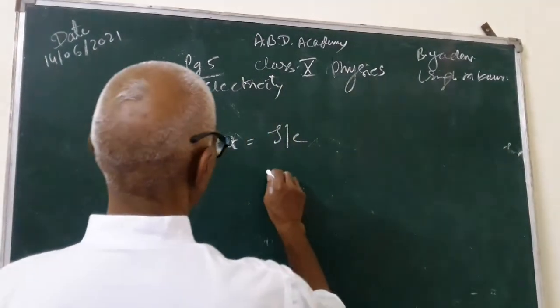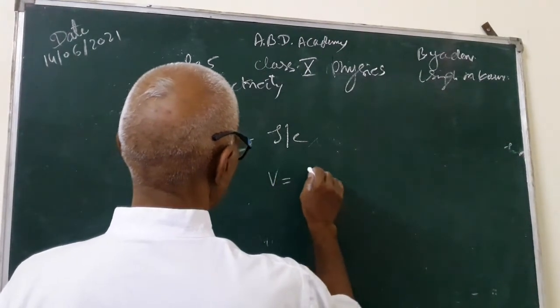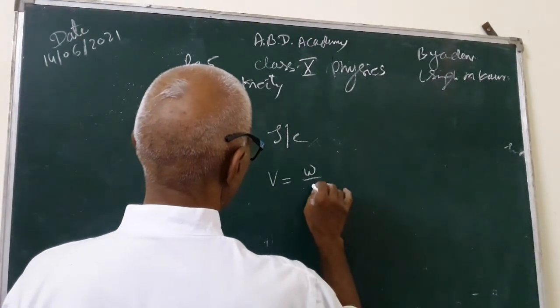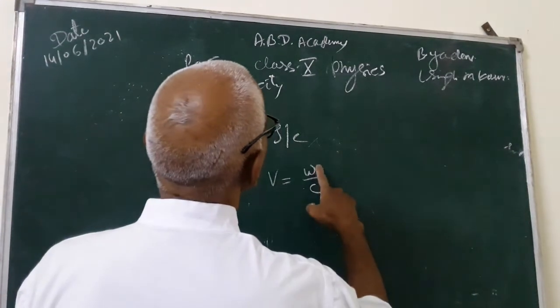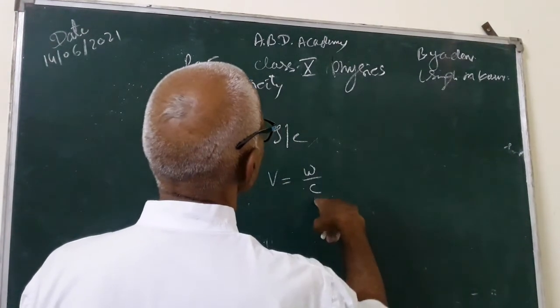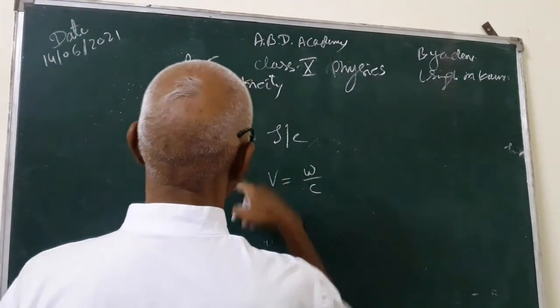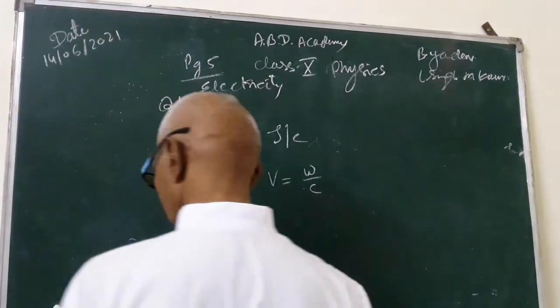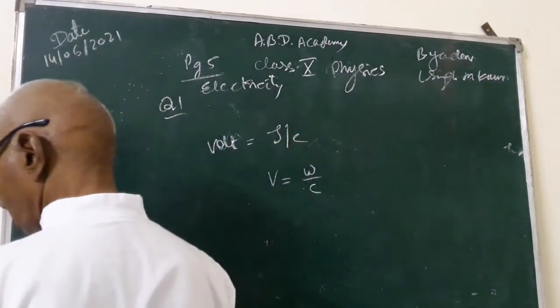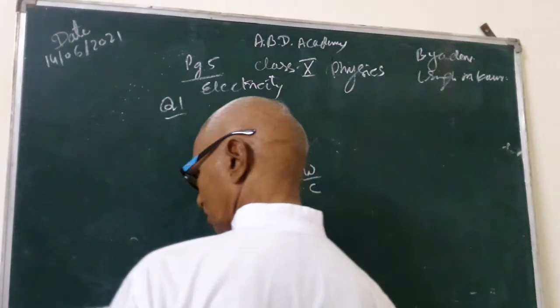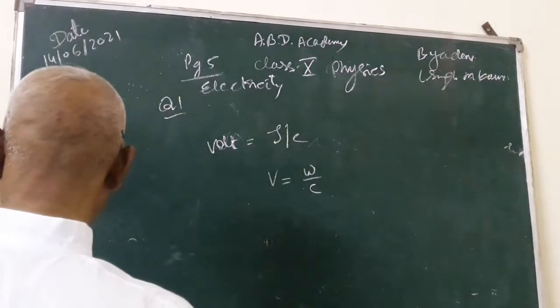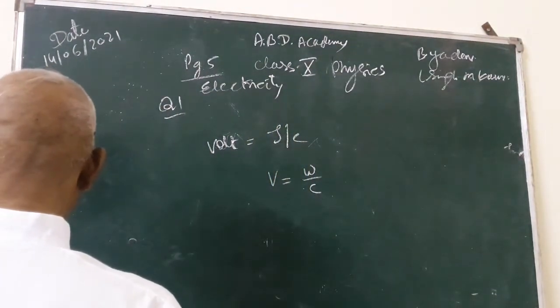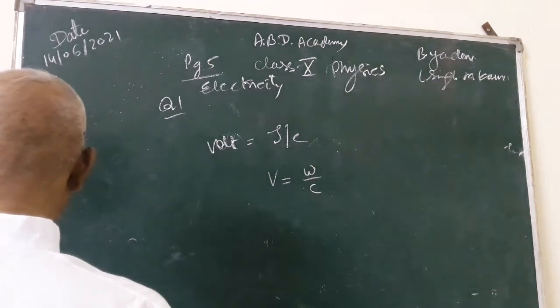Because you know that volt is equal to work done upon charge. Work done is in Joule and charge is Coulomb. So Joule per Coulomb is measured in volt student. So its answer is volt. This is the Coulomb statement correctly defines a volt. A volt is Joule per Coulomb.